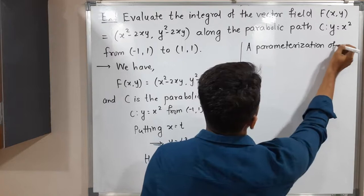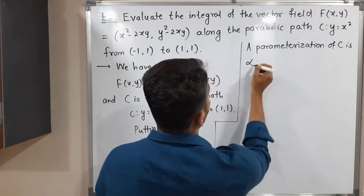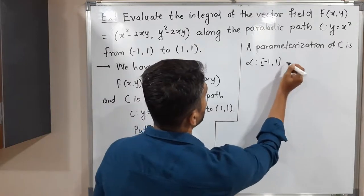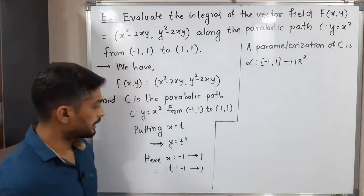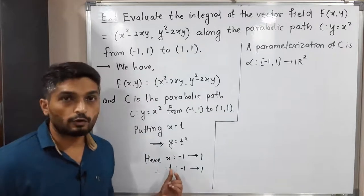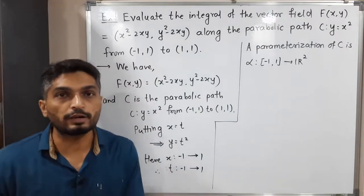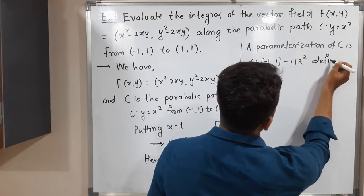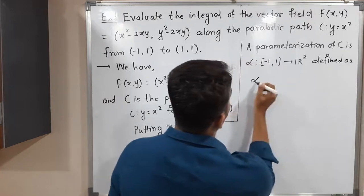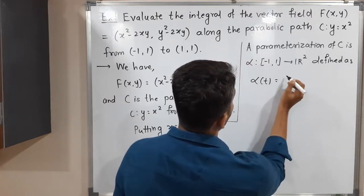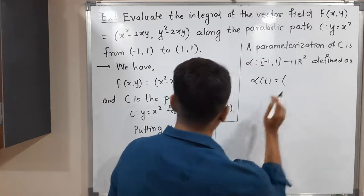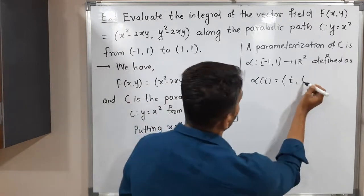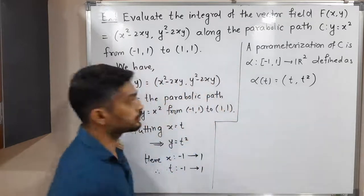The parametrization of C is denoted by α, defined on the closed interval [-1, 1] to ℝ². Since the limits of t are from -1 to 1, we define α on the closed interval [-1, 1]. Defined as: α(t) = (x, y) = (t, t²). In this way, we got the parametrization of the given curve C.